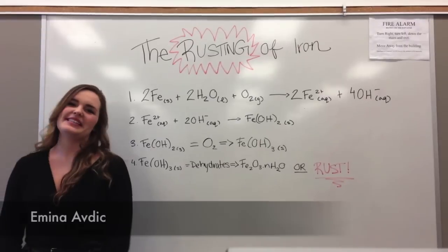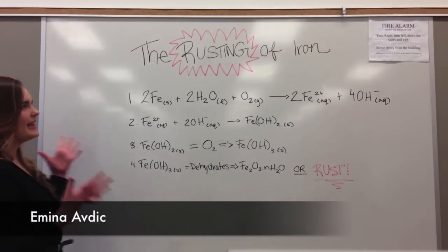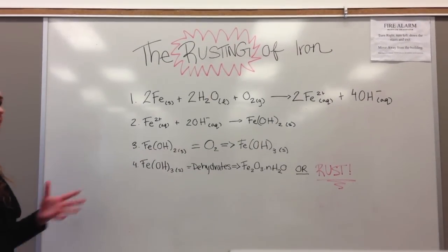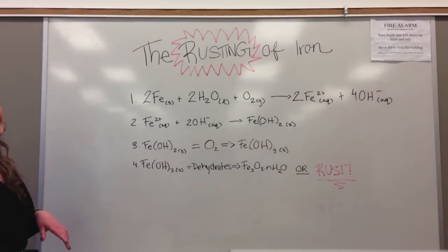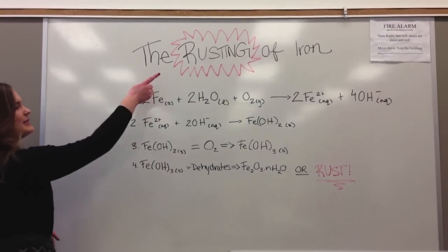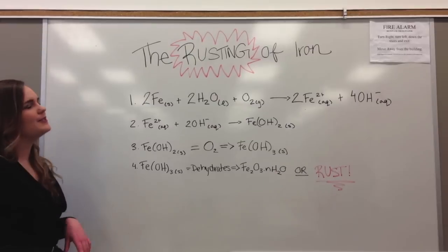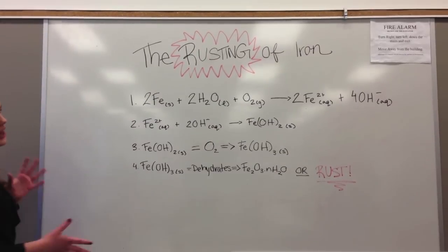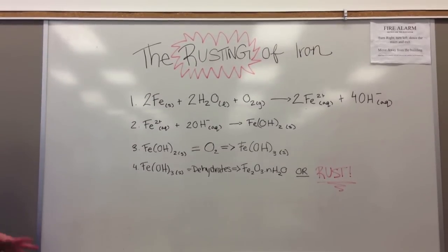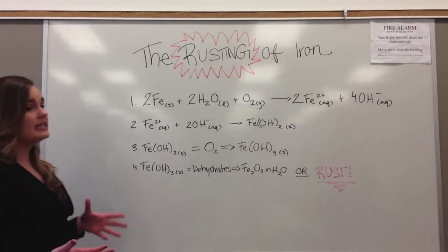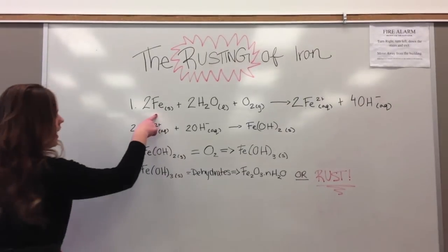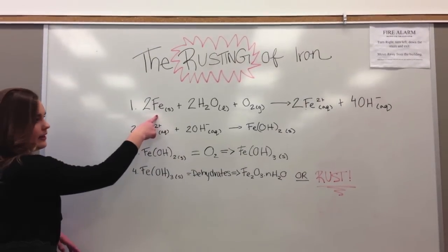I'm Mina and I'm going to be teaching you basically the chemical formulas for corrosion. In this case, we're talking about a special type of corrosion, which is rusting. It usually happens with iron. So here we have an iron nail, which is the Fe solid right here.